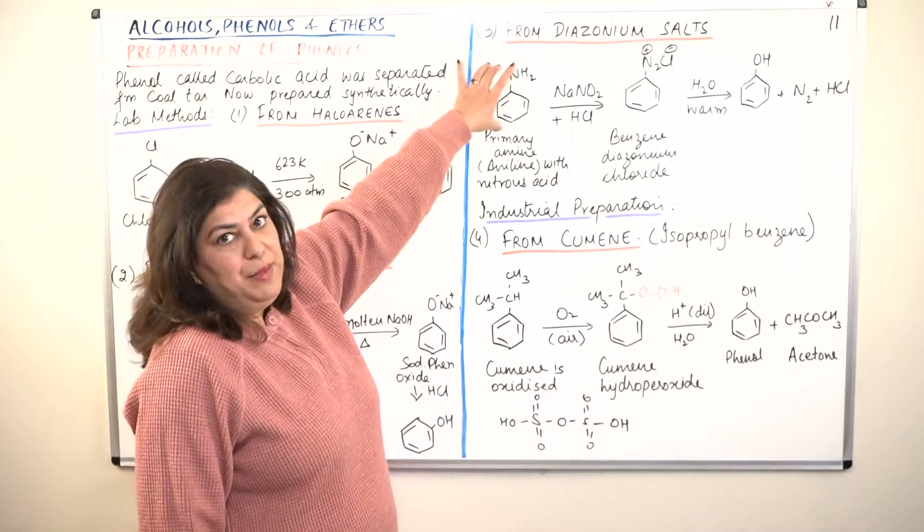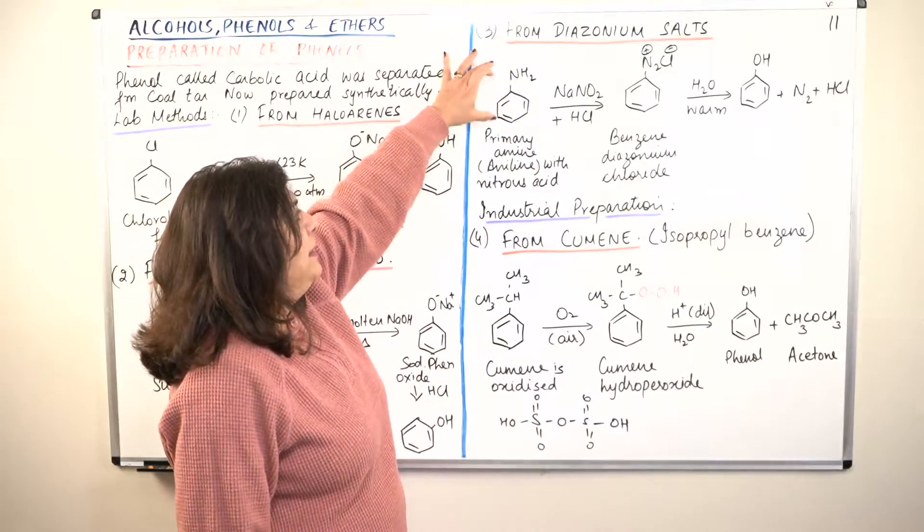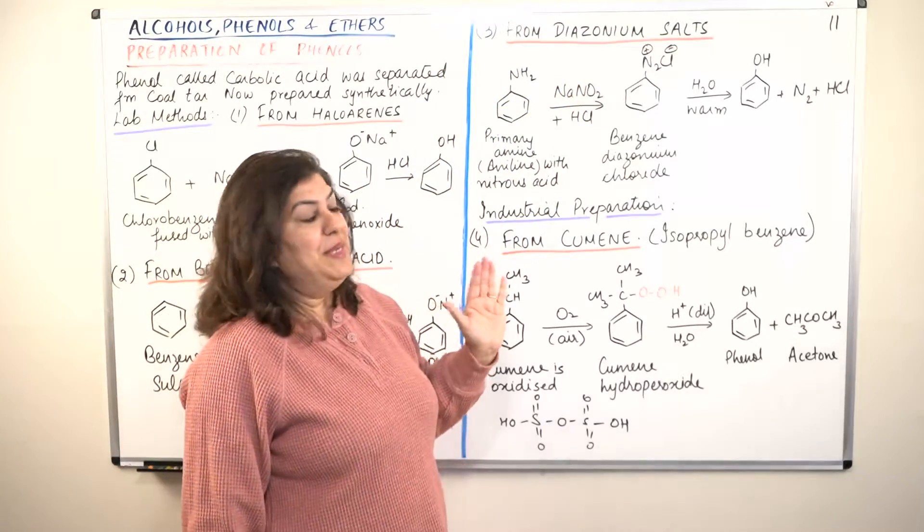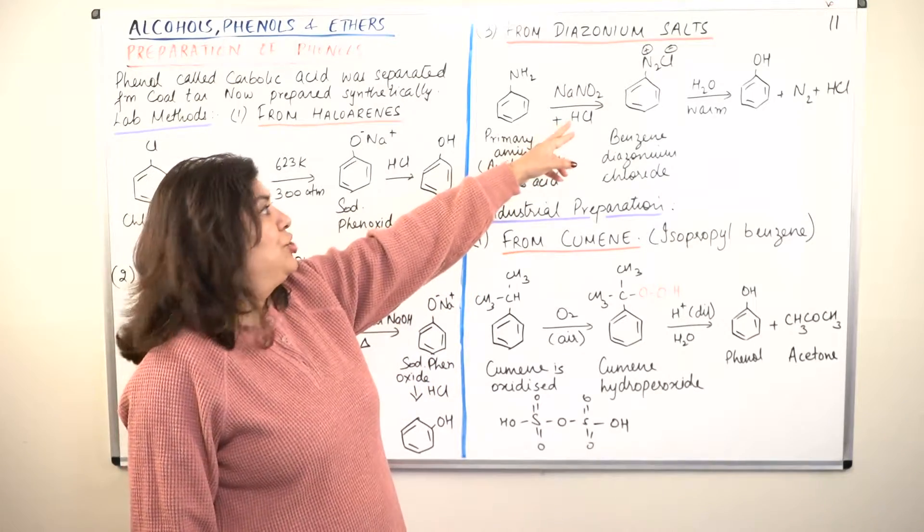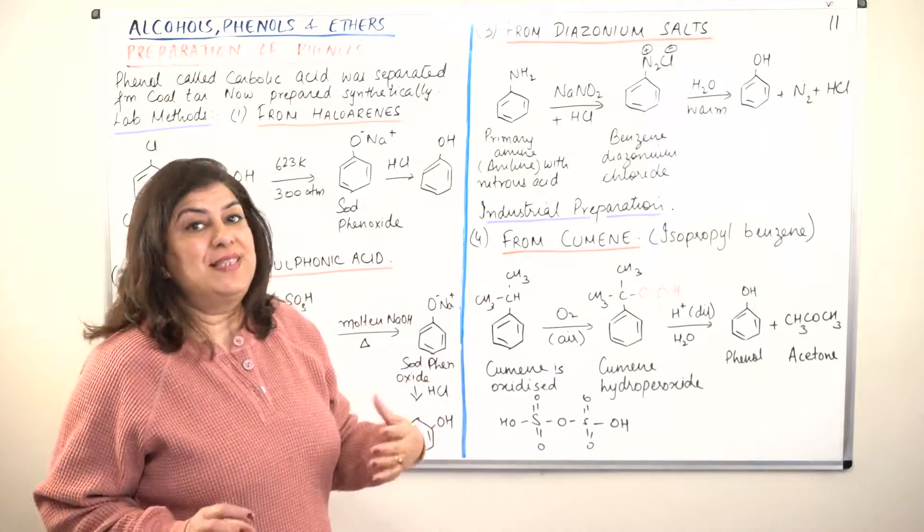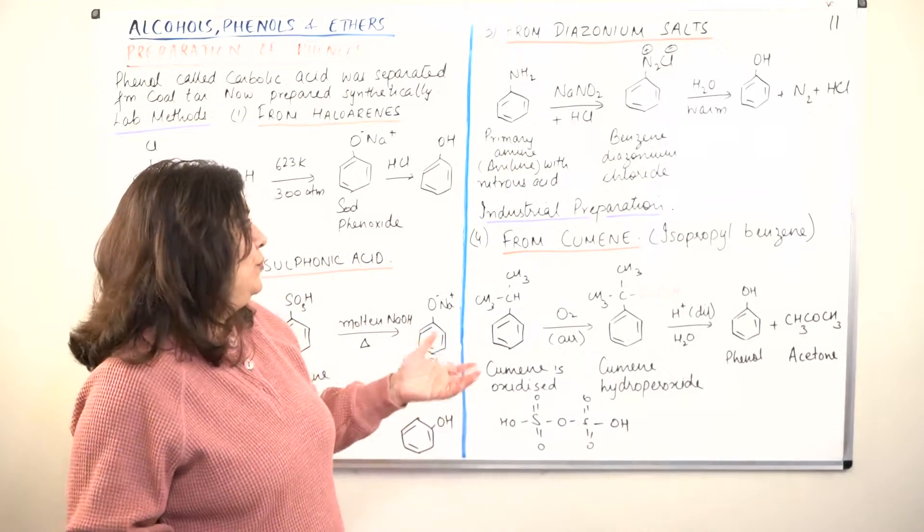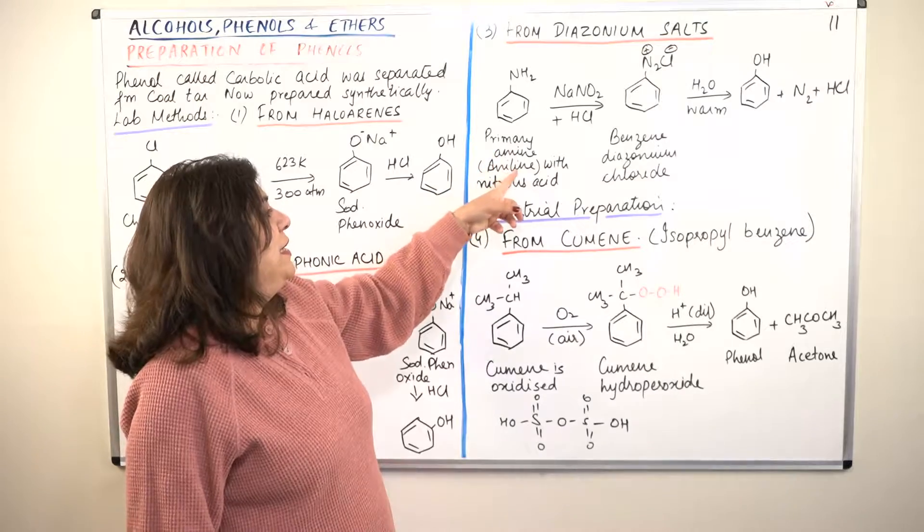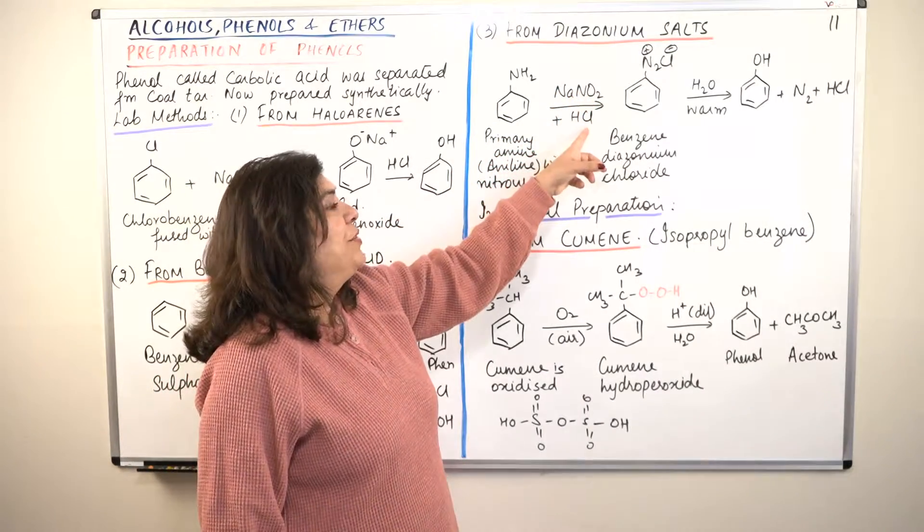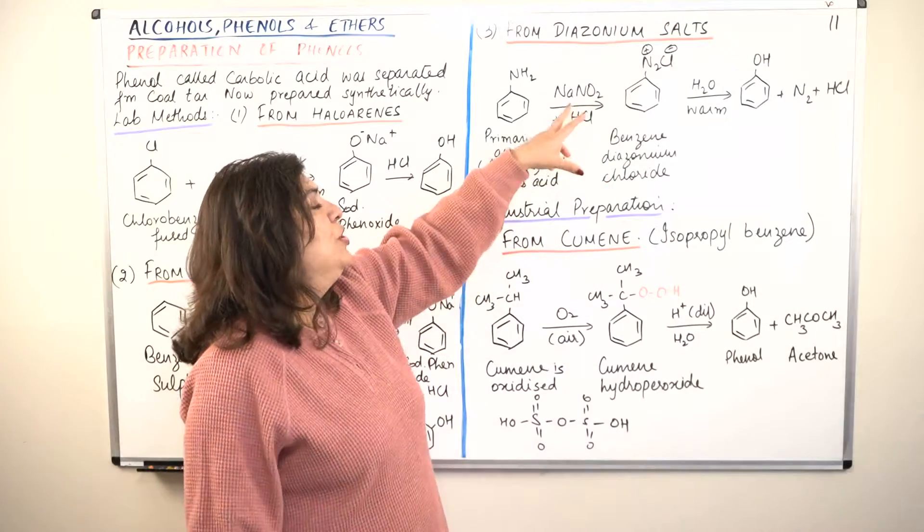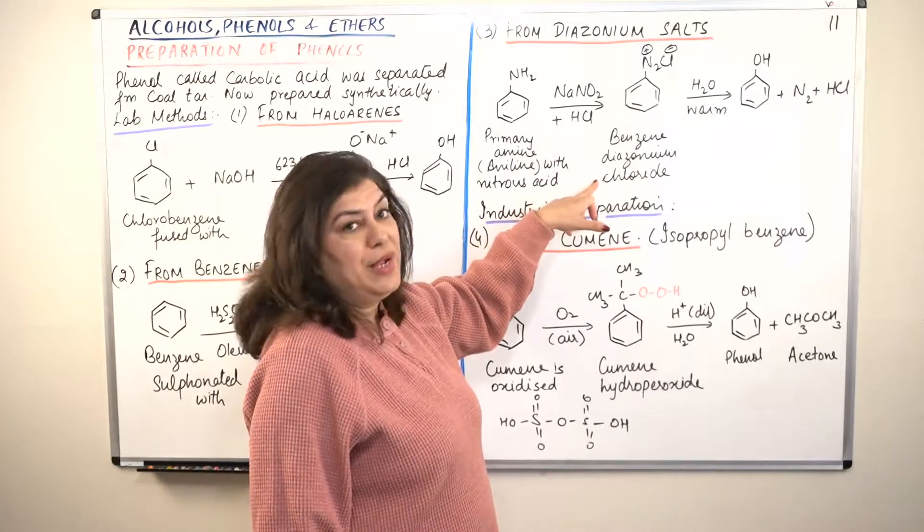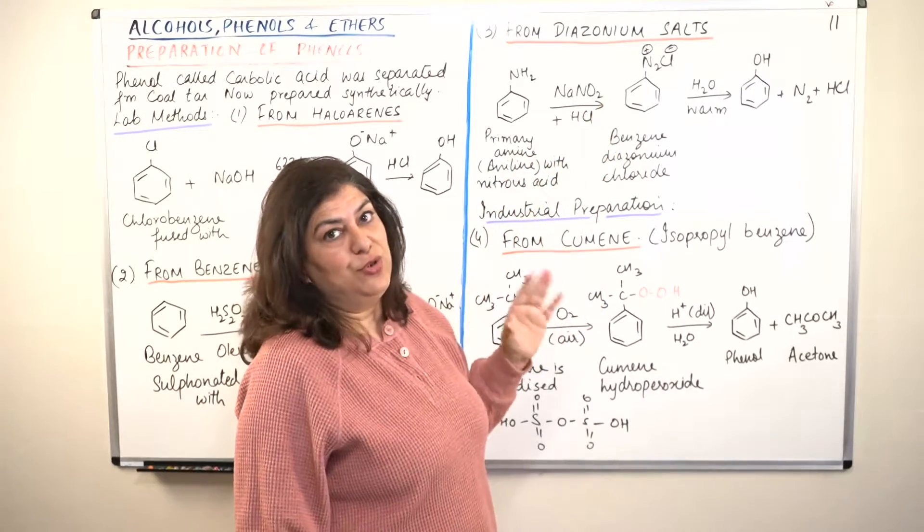How do we prepare a diazonium salt first? You take a primary amine - that is we take aniline, that is a benzene ring to which NH2 is attached, make it react with sodium nitrite followed by acidification. Or you would say NaNO2 plus HCl would form nitrous acid, HNO2. So it is primary amine aniline reacted with nitrous acid, which is prepared by sodium nitrite and HCl. Combining the two, you get nitrous acid and you prepare benzene diazonium chloride from this, which is the diazonium salt.